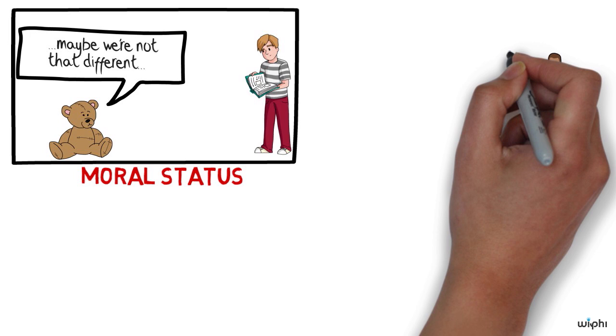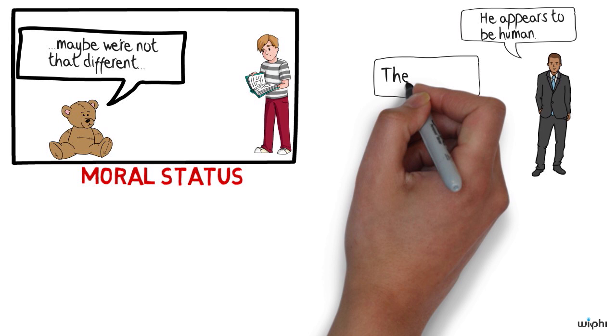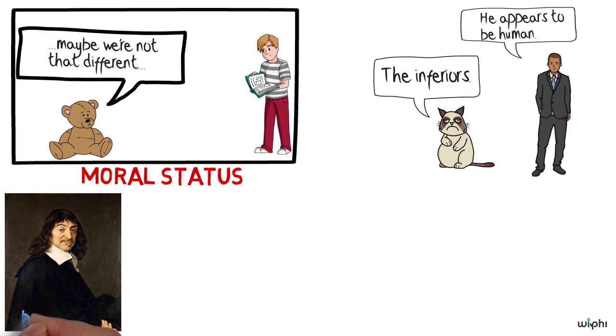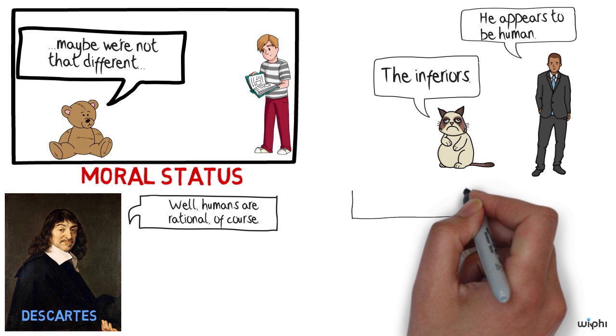Now, historically, most philosophers have thought that the difference between me and my teddy bear is that I'm a human being and my teddy bear is not. In other words, most philosophers have thought that all and only human beings have moral status. But why? What makes us so special? Well, many people like Rene Descartes answer this question by saying that we have rationality or language or self-awareness or some other very sophisticated cognitive capacity. This is what makes us special and this is what gives us moral status.